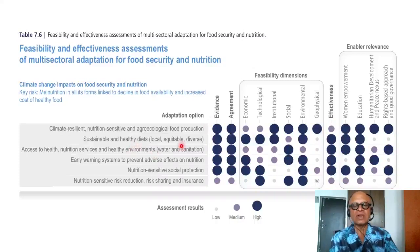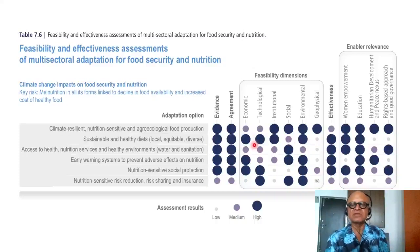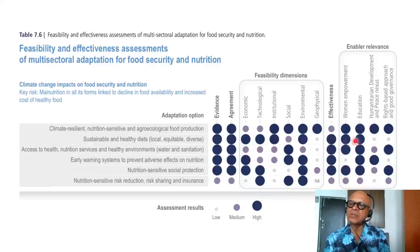Sustainable and healthy diets — local, equitable, and diverse — implicitly assume behavioral changes to shift diet practices, which is not always easy. Nonetheless, evidence of impact is high and agreement is high. Feasibility dimensions for economic, technological, institutional, and environmental are good, but social feasibility is low and geophysical is very low. Effectiveness is high, and enablers are high for women's empowerment and education, but low for human development and rights-based approach.